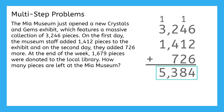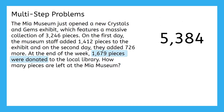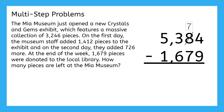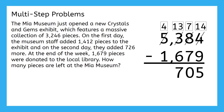Now we know there are 5,384 pieces in the exhibit. But at the end of the week, 1,679 pieces were donated to the local library. We now have to figure out how many are left after their donation — how many are left sounds like subtraction. Pause here to solve using the subtraction algorithm. We need to regroup in order to subtract: 14 minus 9 equals 5. Then 7 minus 7 equals 0. We need to regroup again, so 13 minus 6 equals 7. And then 4 minus 1 equals 3. So there are now 3,705 pieces left at the MIA Museum.